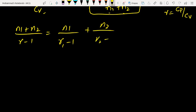N1 plus N2 divided by gamma minus 1 equals N1 over gamma 1 minus 1 plus N2 over gamma 2 minus 1. We have two moles. So, 1 plus 1 divided by gamma minus 1 equals 1 over monatomic gamma, which is 5 by 3 minus 1, plus 1 over diatomic gamma, which is 7 by 5 minus 1.